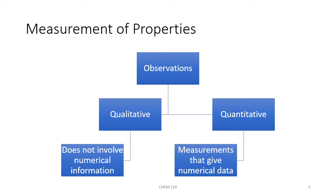Some of the observations will lead to either qualitative data or quantitative data. Qualitative data is going to be anything that doesn't involve any numerical information, meaning numbers. This can be information such as color, something like smell,